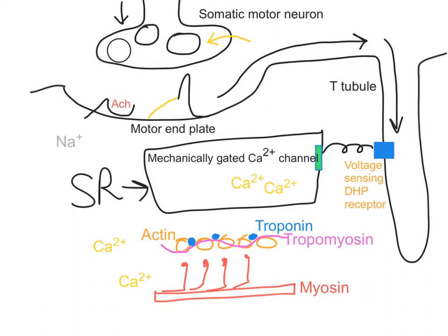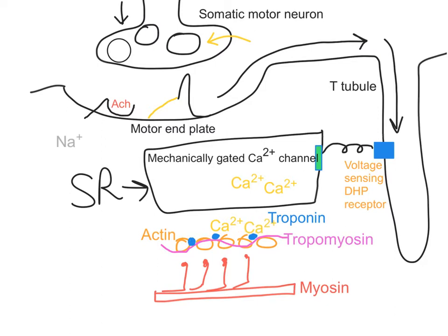As a result, the calcium is going to move down its concentration gradient into the sarcoplasm. This calcium is then going to bind to troponin. It's binding to all the troponin, and what that does is pulls the tropomyosin away from the binding site on the actin — the myosin binding site.